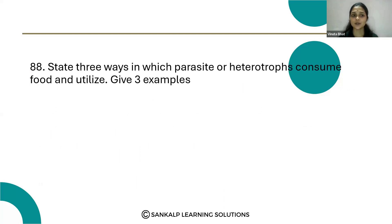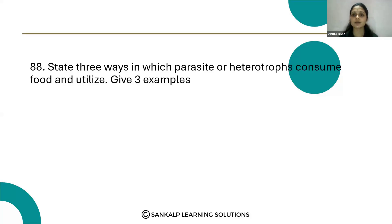Let's see question number 88: state the three ways in which parasites or heterotrophs consume food and utilize. Give three examples. Heterotrophs get their food from other organisms, and there are three types of parasites or heterotrophs.